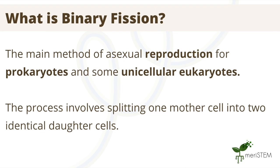First we are going to explore binary fission, which is the main method of asexual reproduction in prokaryotes. The process involves splitting one mother cell into two diploid daughter cells with identical genetic material.